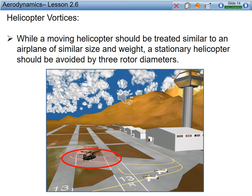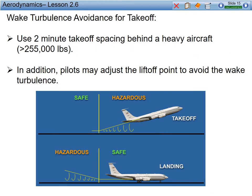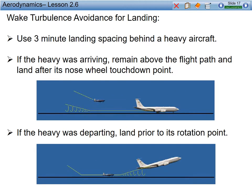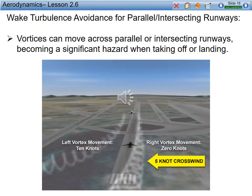Wingtip vortices for helicopters: moving helicopters should be treated similar to an aircraft of similar size and weight. A stationary helicopter in a hover should be avoided by at least three rotor diameters. If you have a 14,500 pound aircraft in a hover, it's producing approximately 14,500 foot-pounds of thrust coming down, which is a significant amount of thrust and can flip your aircraft in two seconds. Wake turbulence can also move parallel to intersecting runways and can flow with a crosswind blowing from one side to the other.